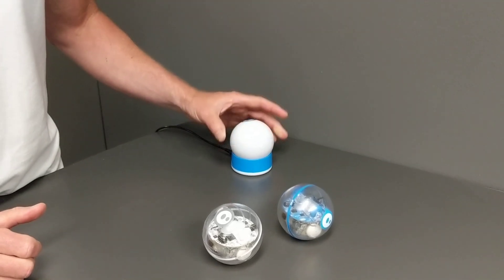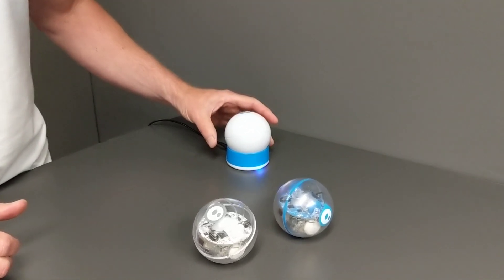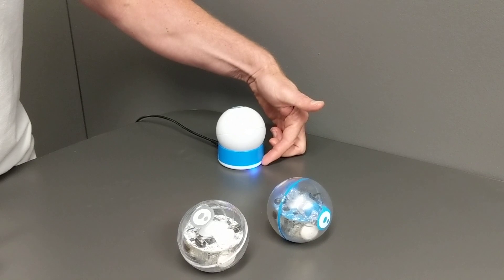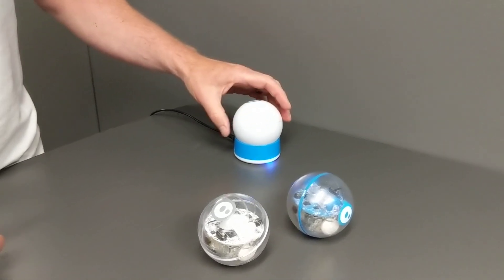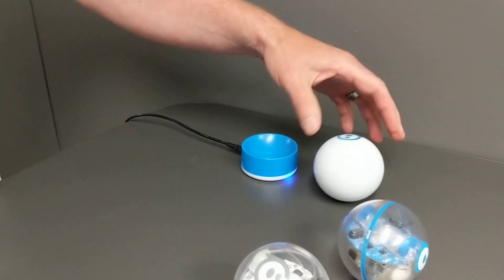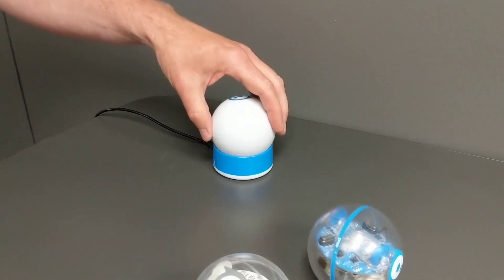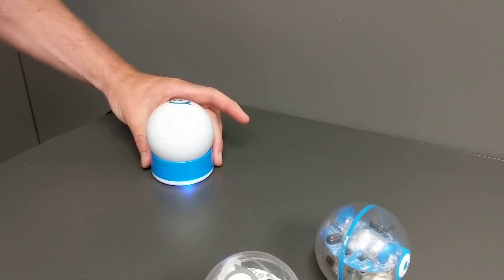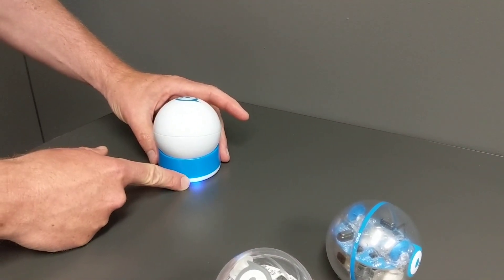the first step is to put it on the base. When you put the Sphero on the base, you'll see the blue light starts to flash, you'll know that it's connected properly, just make sure that the heavy bottom is properly sitting on there, and you can tell because the blue light is flashing.